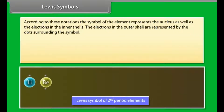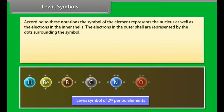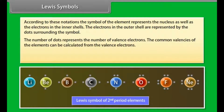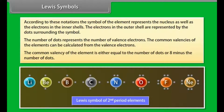Lewis symbols. According to these notations, the symbol of the element represents the nucleus as well as the electrons in the inner shells. The electrons in the outer shell are represented by dots surrounding the symbol. The number of dots represent the number of valency electrons. The common valencies of the element can be calculated from the valency electrons. The common valency of the element is either equal to the number of dots or eight minus the number of dots.